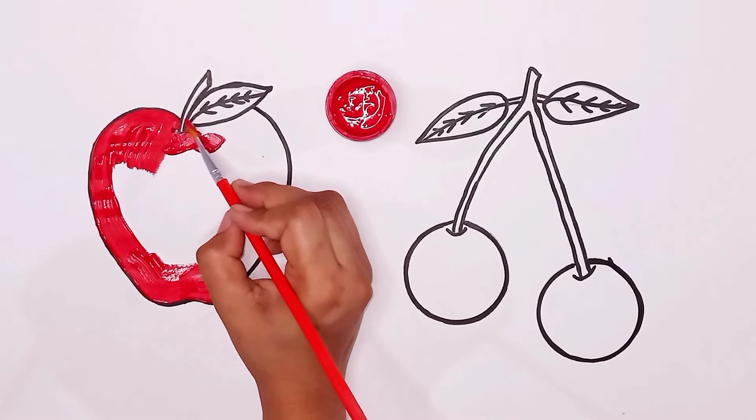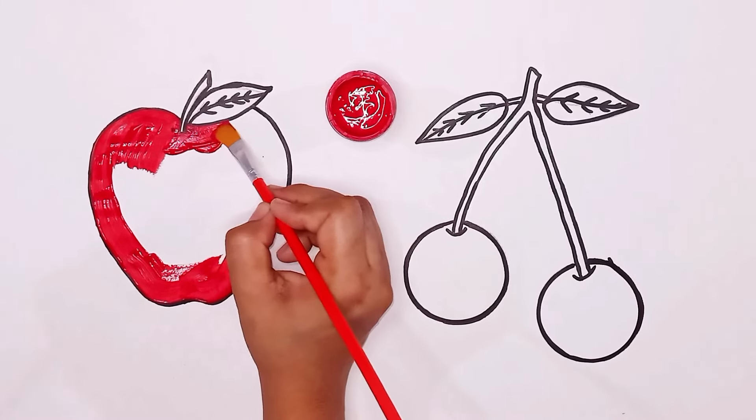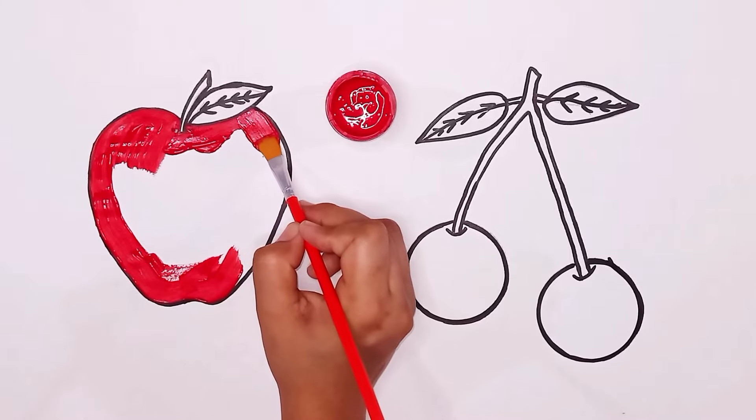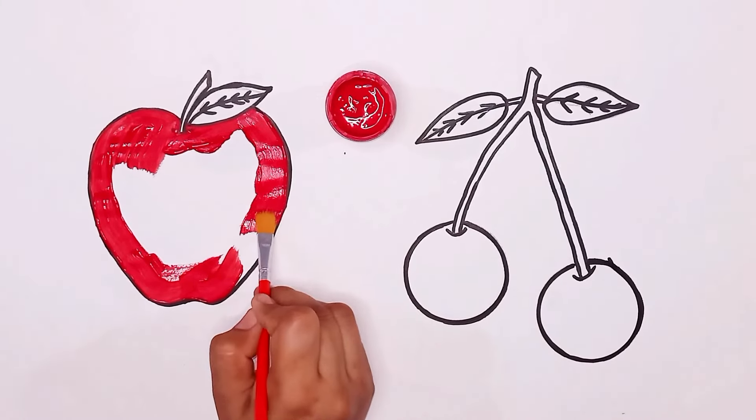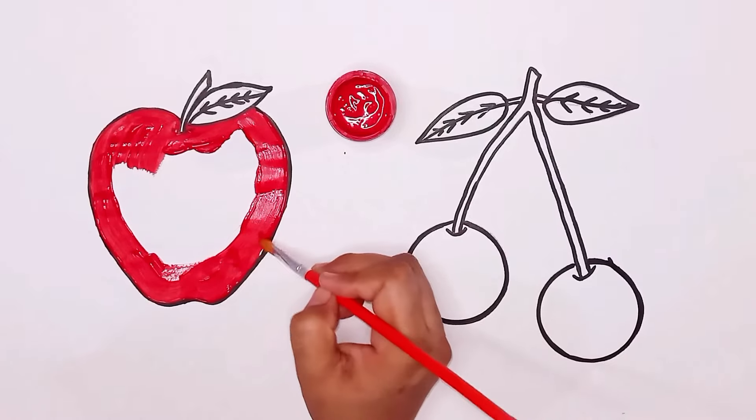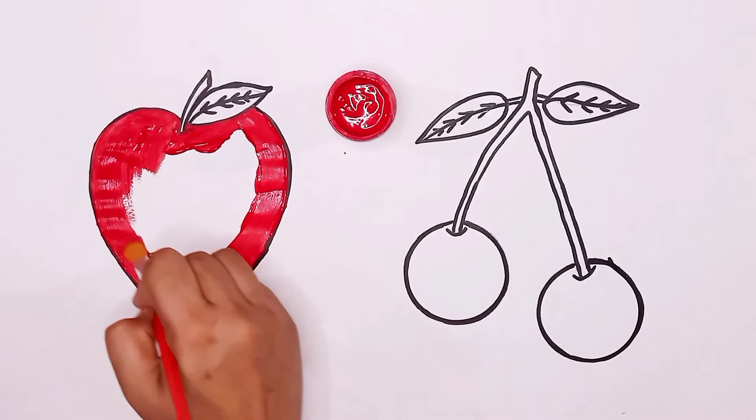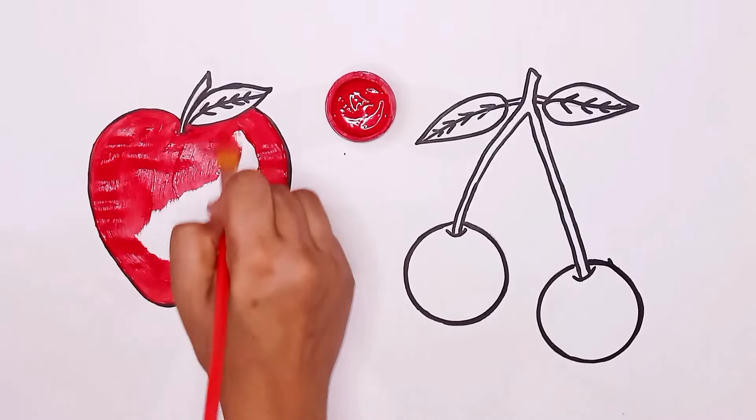M is for mat, ma-ma-mat. N is for net, n-n-net. O is for orange, o-o-orange. P is for pet, p-p-pet.